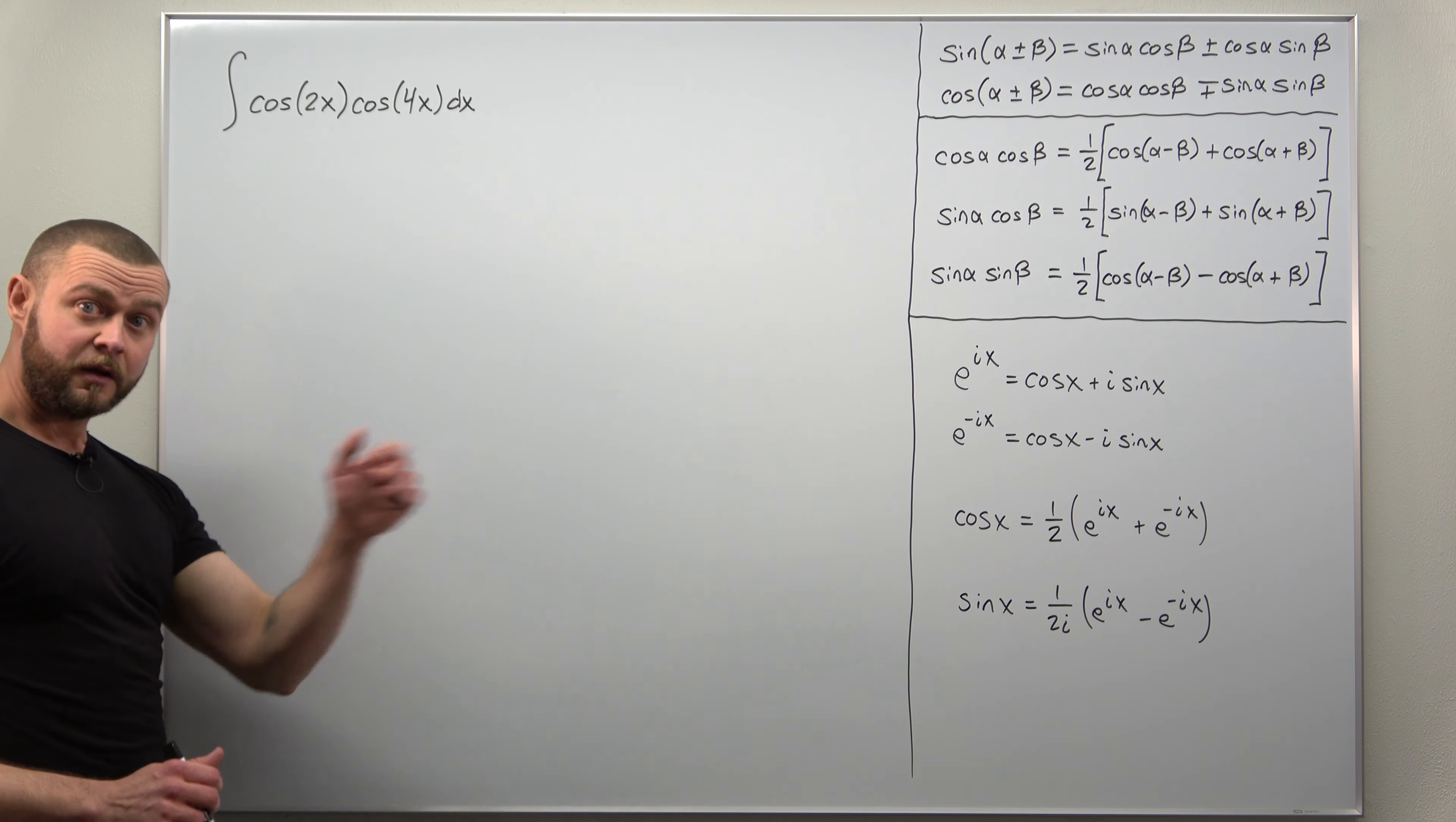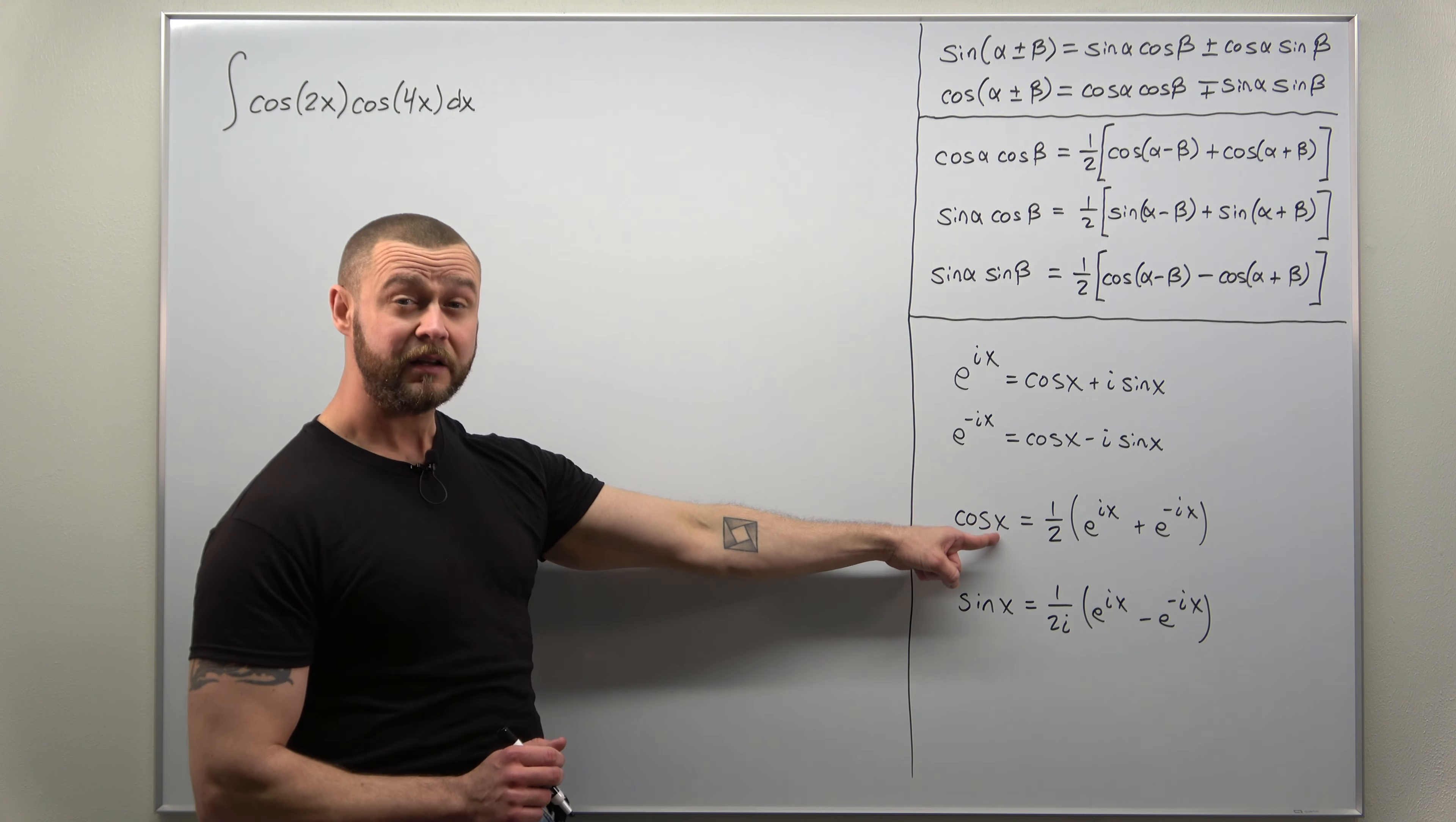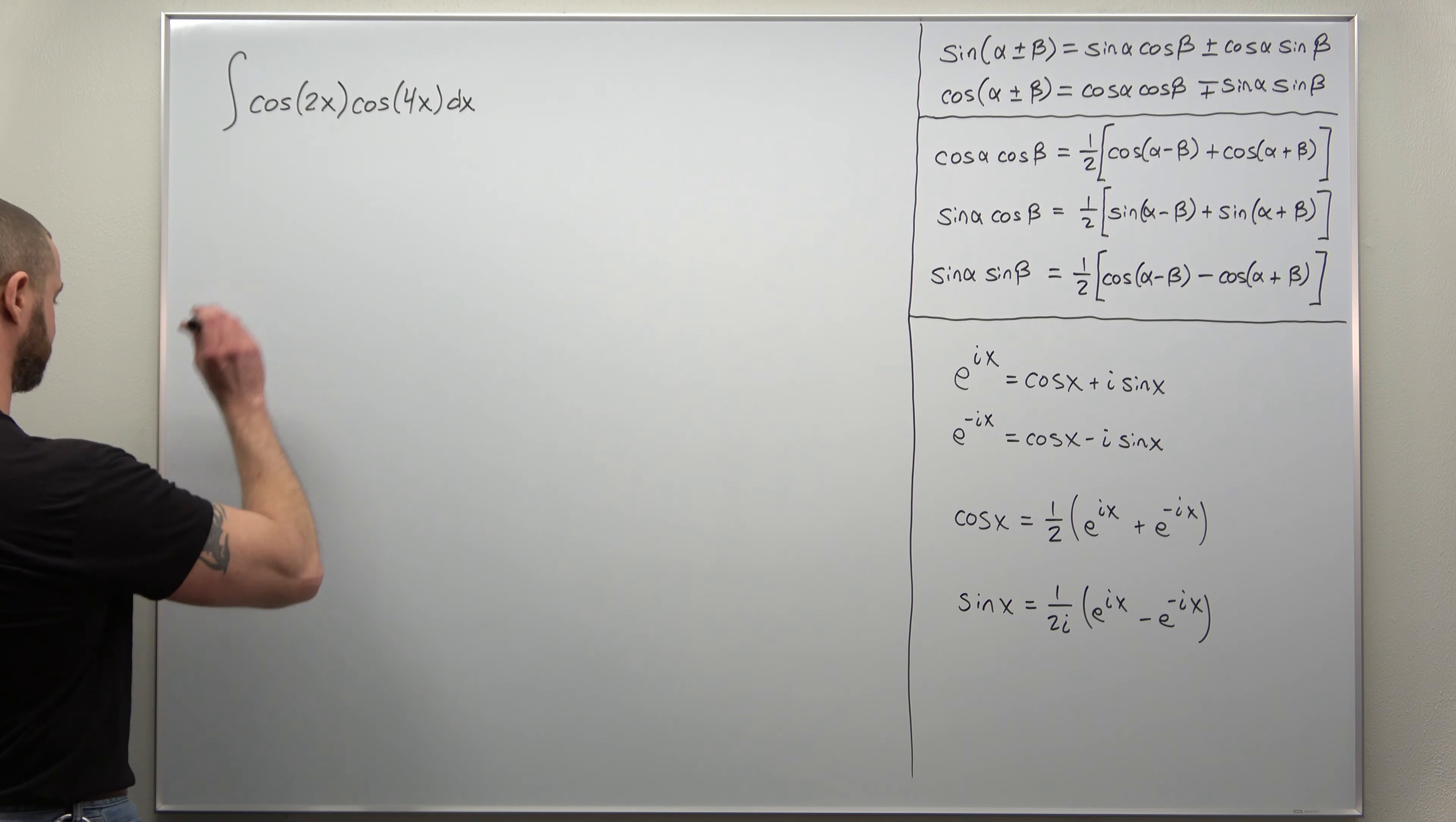Let's start by rewriting our function, replacing each cosine term with the appropriate version in terms of complex exponentials. If you're not comfortable with the replacements, just make sure you realize here the formula is stated with x, but you can replace x with 2x and then separately with 4x.